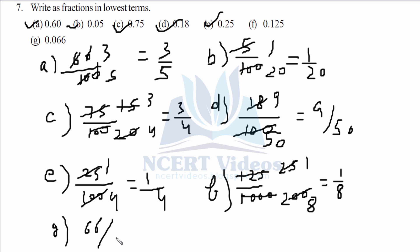G part. 0.066 is 66 over 1,000. So it goes with 2 to give 33 over 500.